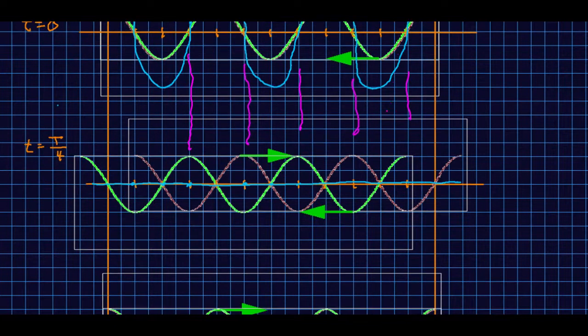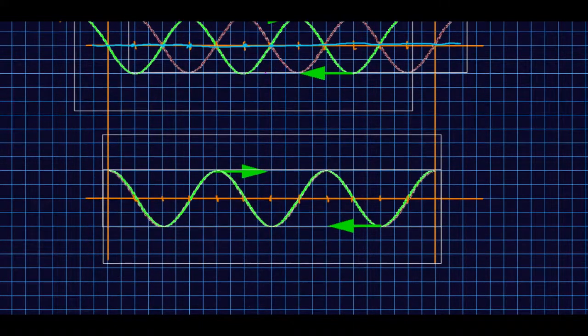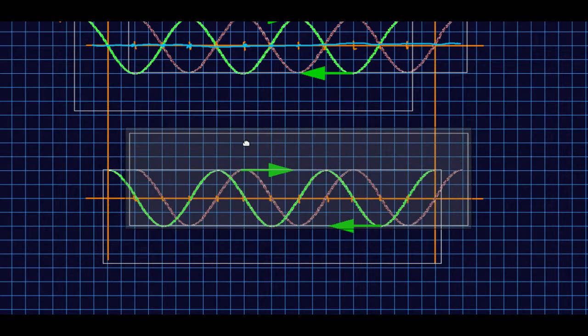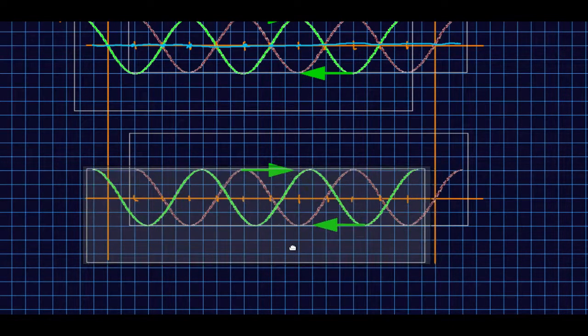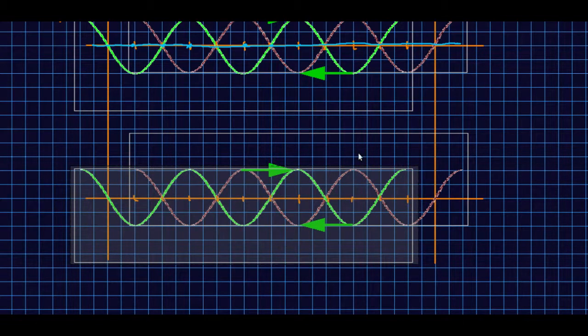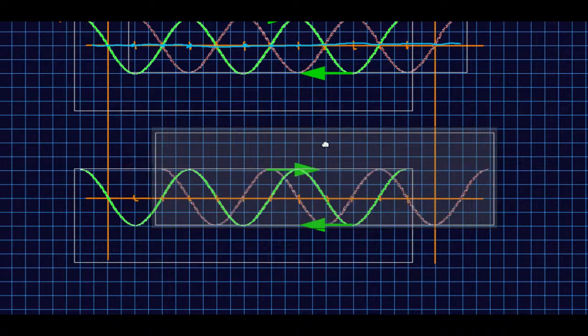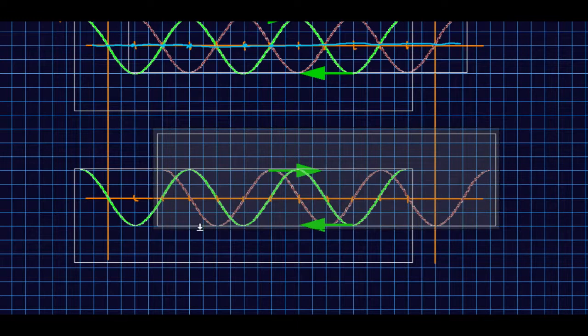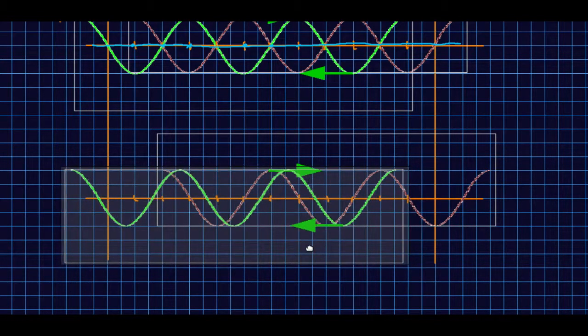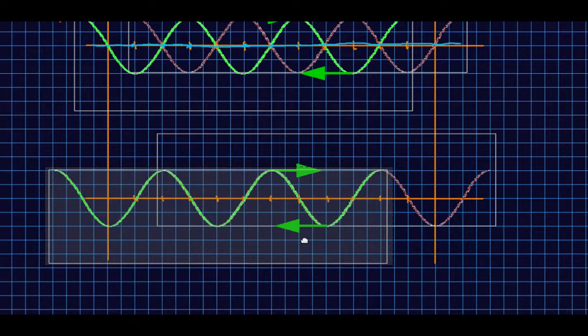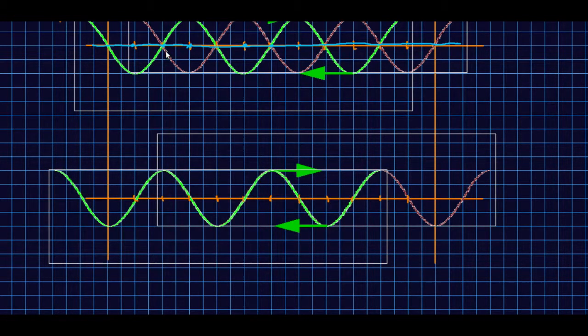Now let's look at a quarter cycle after that. I'm going to go another quarter period. So I move this one a quarter of a wavelength this way and this one a quarter of a wavelength this way. And look at that, we're back to constructive interference where crests are on top of crests and troughs are on top of troughs.